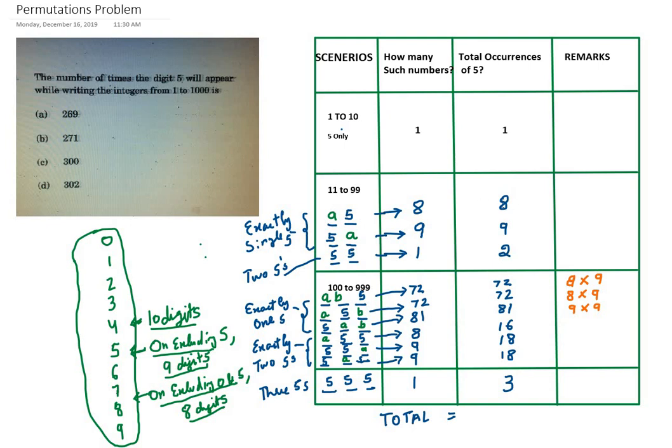As we have only single 5, the occurrences of 5 will also be 8. Similarly, the next sub case is 5a, where the first 5 is fixed and the second number can be anything from 0 to 9 other than 5. Excluding 5 from this set of 10 numbers, we will be left with 9 digits, so 9 such numbers are possible like 51, 52, and so on up to 59 other than 55.